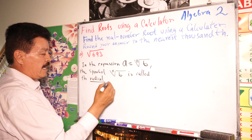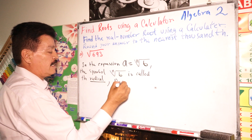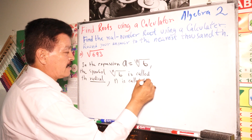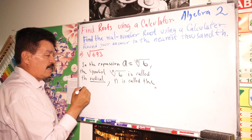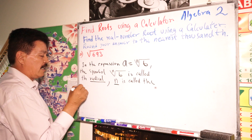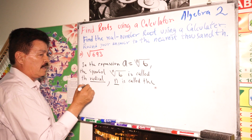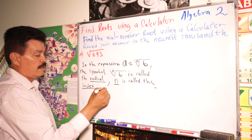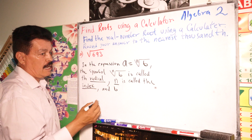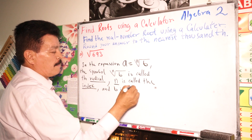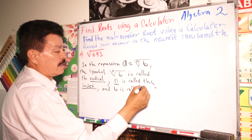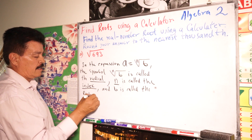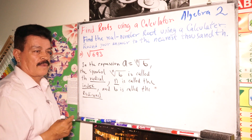Now, N is called the index. So N is called the index. And B is called the radicand.